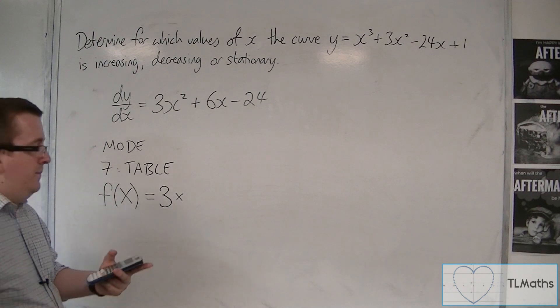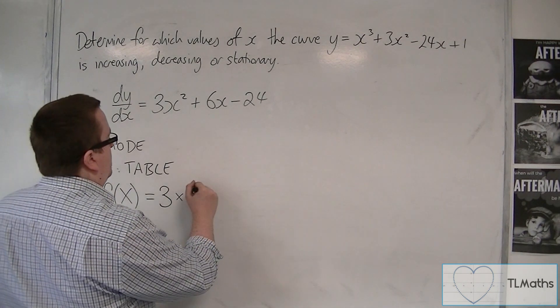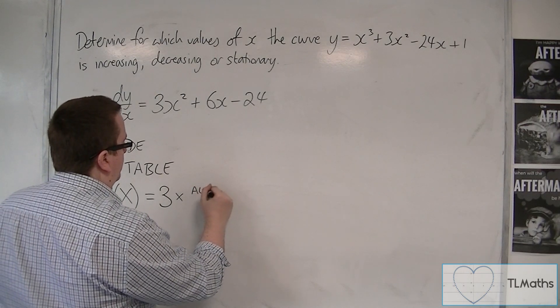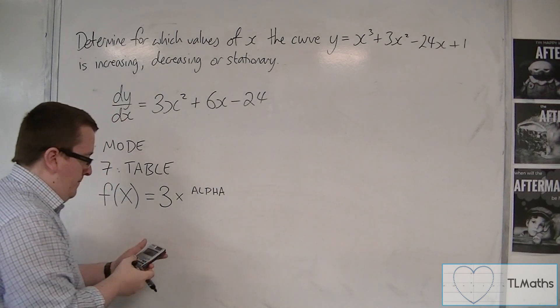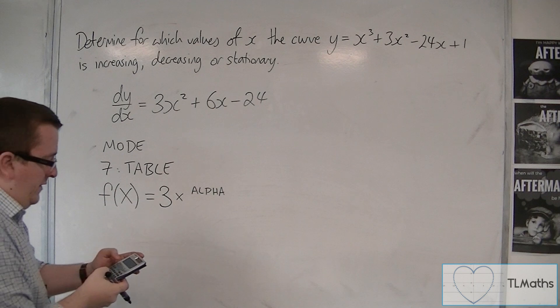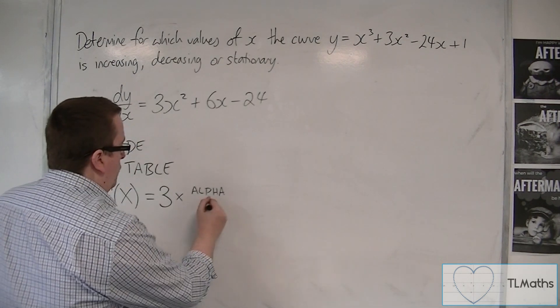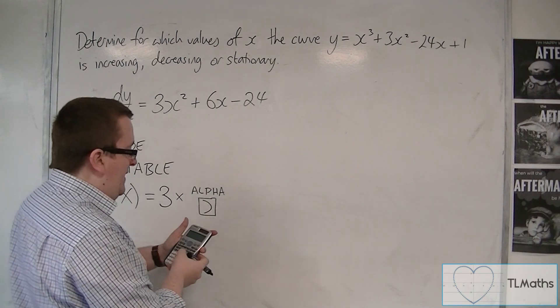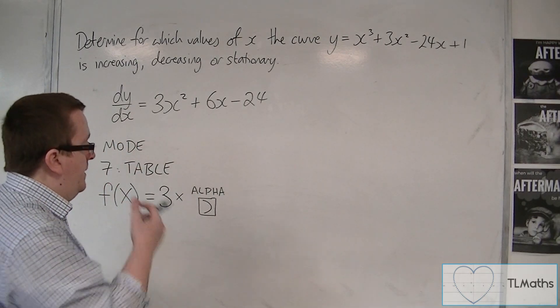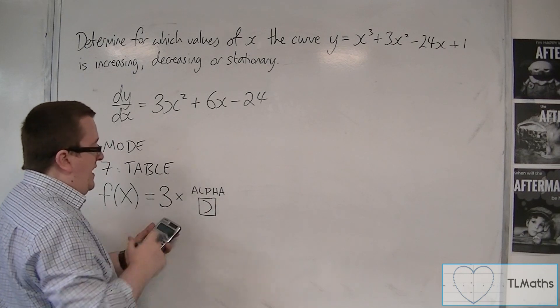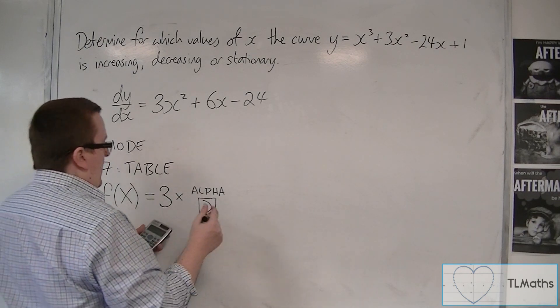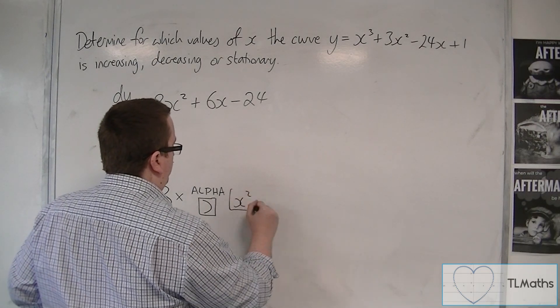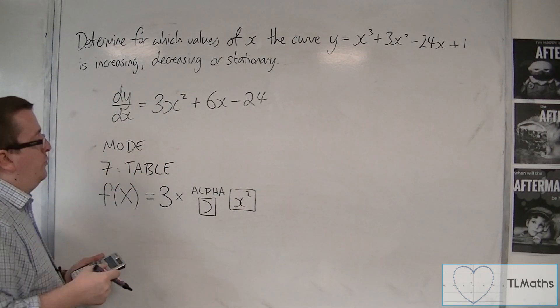Now where is the x? The x can be found by pressing the red alpha button, and then pressing the right-hand bracket button. You'll see a little x in the top right-hand corner of that button. You should now see an x appear. And we're then going to press the x squared button to put a squared on it.